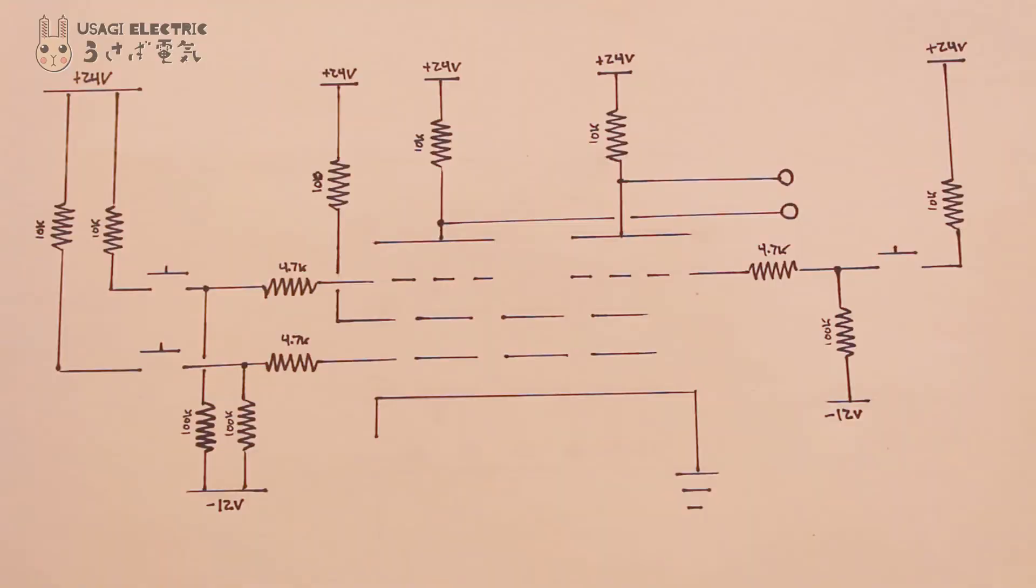Here we have a 6HS8 dual pentode setup as follows. There are three separate buttons, one for each control grid.